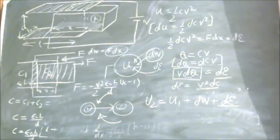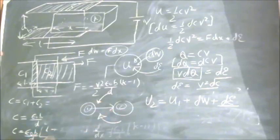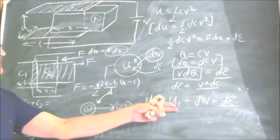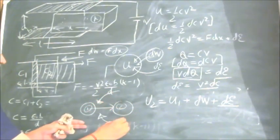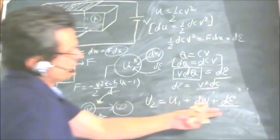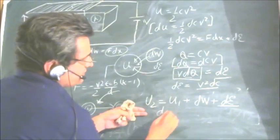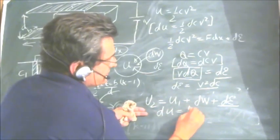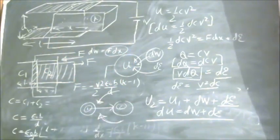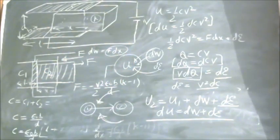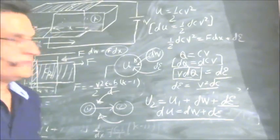Always use the relationship that the energy at state 2 equals energy at state 1 plus the work done on the system and energy given to the system — it can be heat energy or energy given by a battery, any type of energy. This becomes DU equals DW plus DE. Sign convention is very important, otherwise we will get the wrong result. That is all on solving this problem. Thank you.